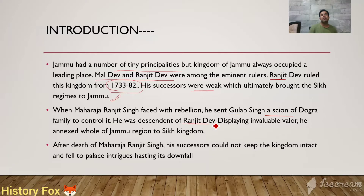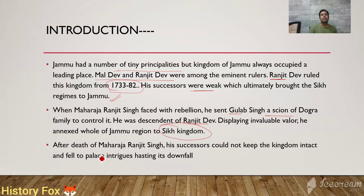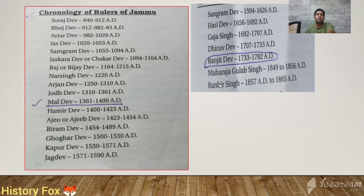Gulab Singh was a descendant of Ranjit Dev, displaying invaluable valor. He annexed the whole of Jammu region to the Sikh kingdom. After the death of Ranjit Singh, his successors could not keep the kingdom intact and fell to palace intrigues, hastening its downfall.